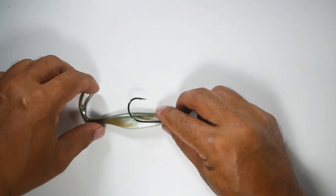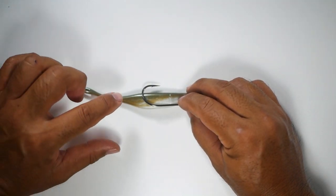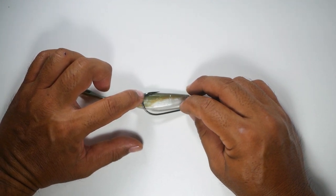Then what we're going to do is lie the bait down. And this will give us the exit point where we want the hook to come out so that the bait will be centered.